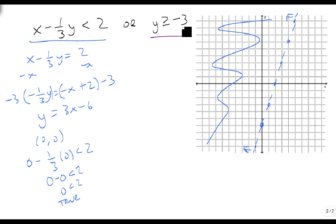Y is greater than or equal to minus 3 is a horizontal line at minus 3, and it's solid because of the or equals. If we plug in (0,0) into this, 0 is bigger than minus 3. This is true as well. So it wants to shade up, and its answer would be right here.